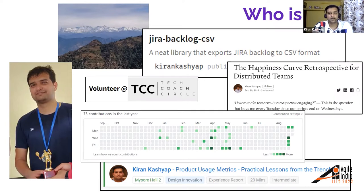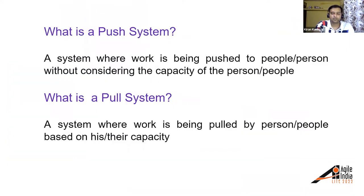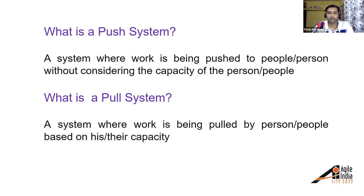Let's start. Before discussing how to create a pull system, let us first understand what a push system is and what a pull system is. A push system is where work is pushed to people without considering their capacity. A pull system is where work is pulled by a person based on their capacity — the work is not pushed onto the person; rather, they pull it whenever they have the capacity.